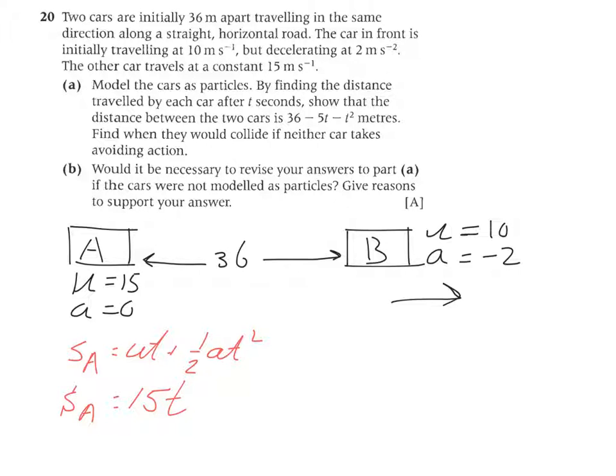Now we're going to do a similar thing for car B, the displacement for B. So SB, we're going to use the same equation UT, so 10T plus half AT squared, so A is minus 2T squared. But we're going to add 36 there at the end because compared to car A, car B already traveled 36 meters.